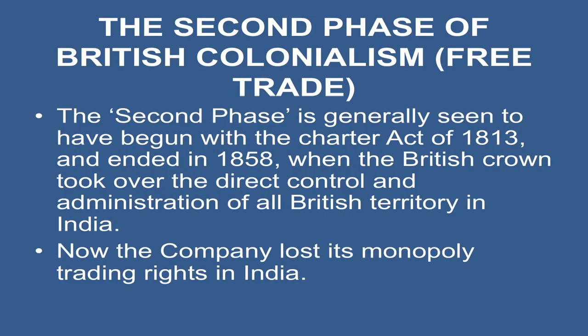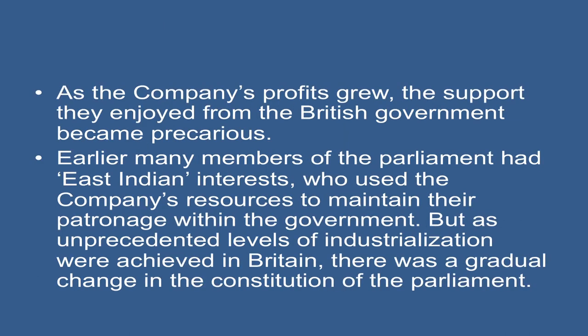The second phase is generally seen to have begun with the Charter Act of 1813 and ended in 1858, when the British Crown took over the direct control and administration of all British territory in India. The company lost its monopoly trading rights in India. As the company's profits grew, the support they enjoyed from the British government became precarious.